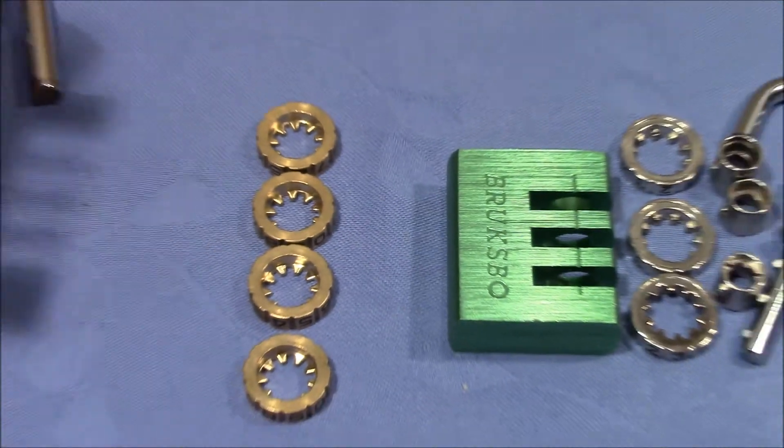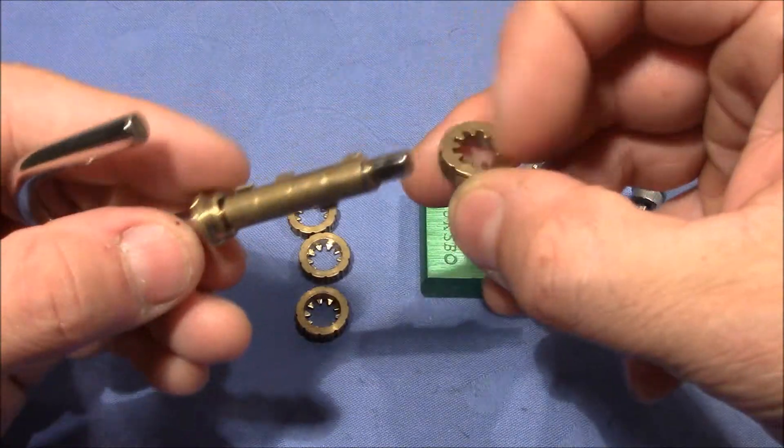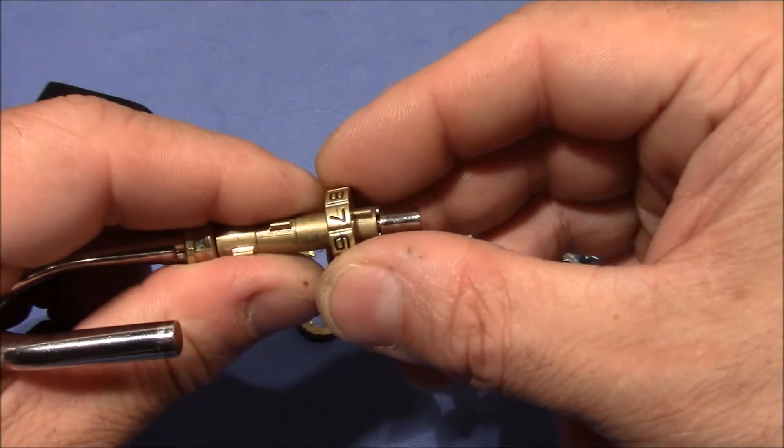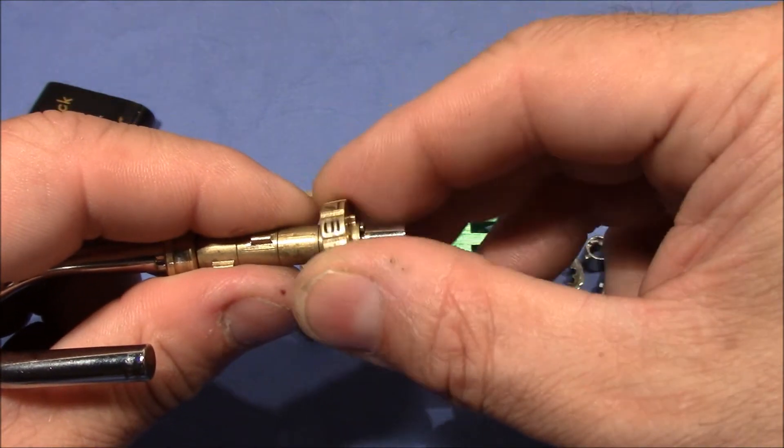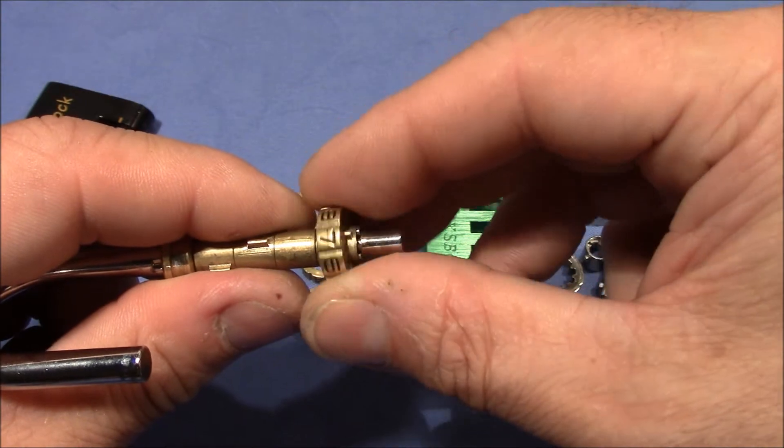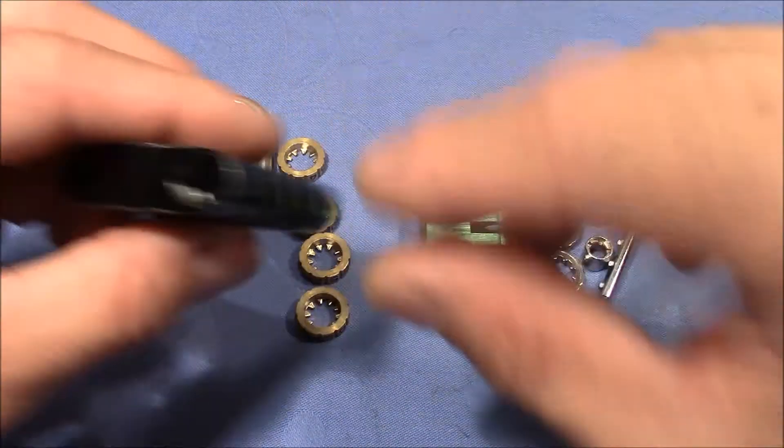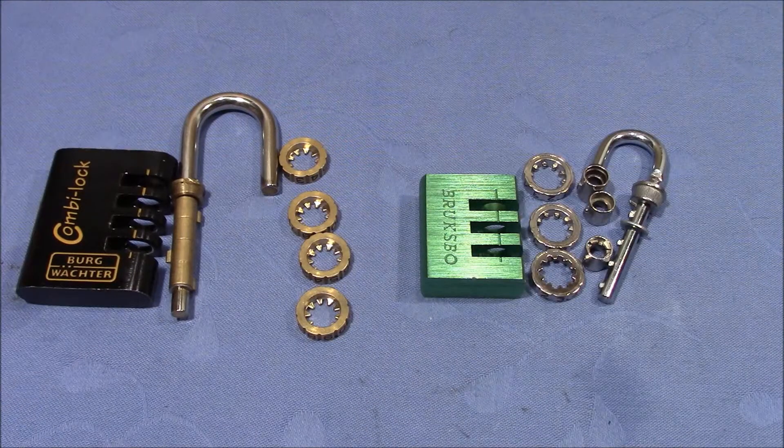So now when you have the shackle in this hole, you can align the teeth of the inner wheels by turning the outer wheel. And so you have the possibility to align all these teeth at the position of the true gate, and then the shackle will come out and the lock is open.